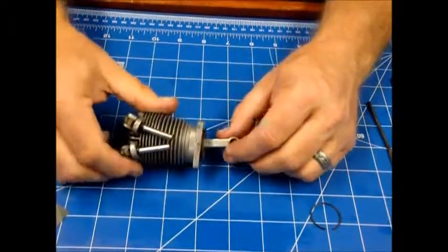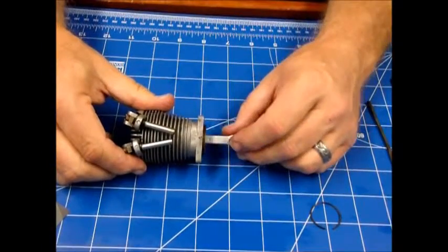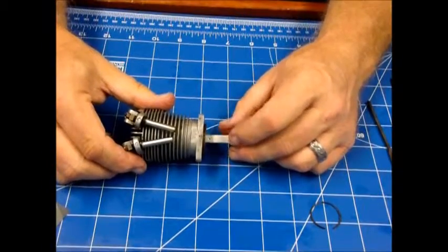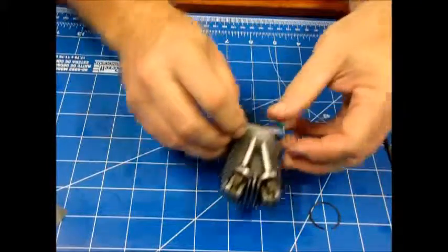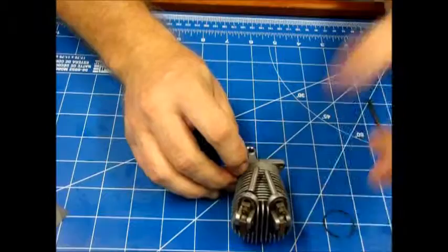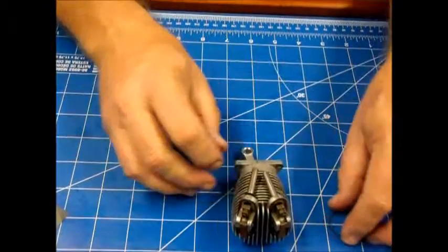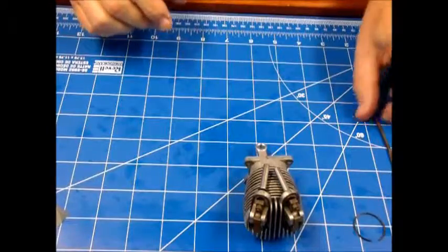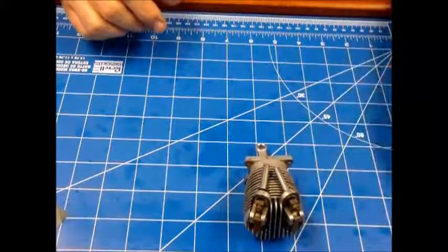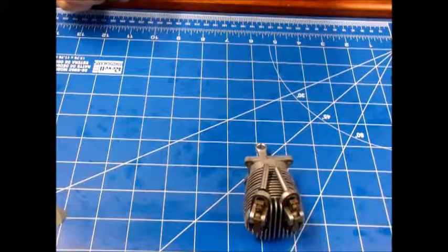So now I've got this set in here so that my dot and the chamfer is facing forward. And that's how it's going to go back on the crankshaft pin. So that part's done. Now we can take a deep breath and go on to other things here for the reassembly.